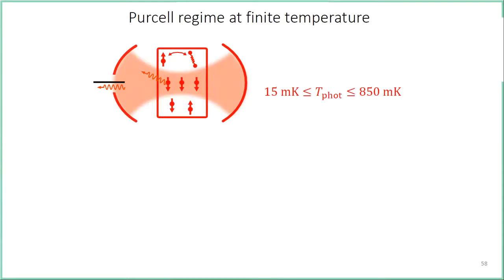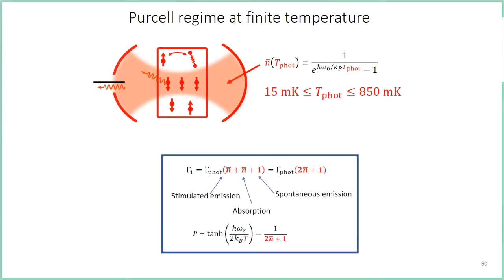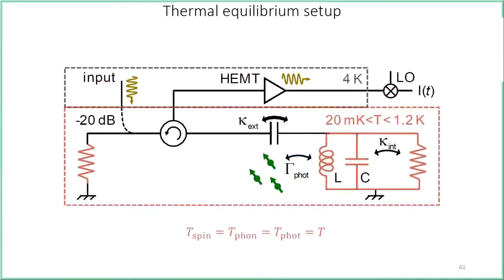We first measure the spectrum by recording the echo as a function of magnetic field. Every time the resonator frequency is resonant with one of the spin transitions, we see a peak in the echo amplitude. We work at about 60 millitesla at this quasi-degenerate transition. The first question we want to answer is whether our spins are in the Purcell regime across the temperature range of our experiment. At finite temperature, thermal photons inside the cavity add absorption and stimulated emission processes alongside spontaneous emission, so the spin relaxation rate gamma_1 is accelerated by a factor 2n+1, where n is the average number of thermal photons.